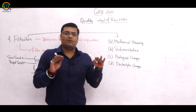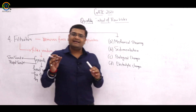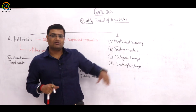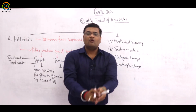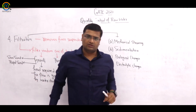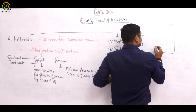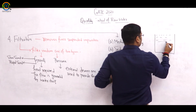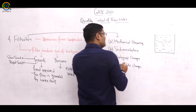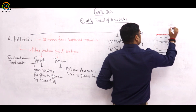In mechanical straining, the particles — the impurities — encounter the filter medium. The size of the void in the filter medium is smaller than the size of the particles. So the particles get retained because they are larger than the voids. This is the mechanical straining process. A top layer forms on the filter medium, and this is the sedimentation process at the top layer.